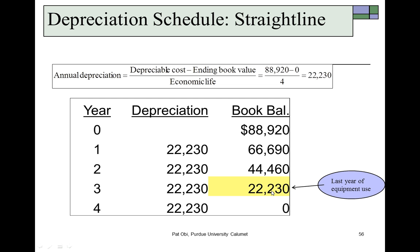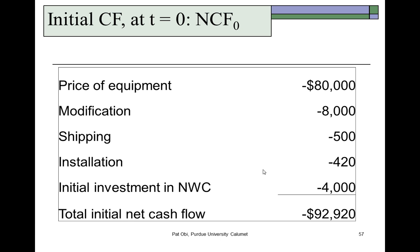For the initial cash flow — typically the cash outflow at time zero — we include all the depreciable basis items plus the initial working capital of $4,000 spent building up the raw materials inventory. Many manufacturing machines require a larger inventory build-up at the outset. Adding all of these up, the initial net cash flow is $92,920, which is what you expect to spend at time zero to get this process in place.